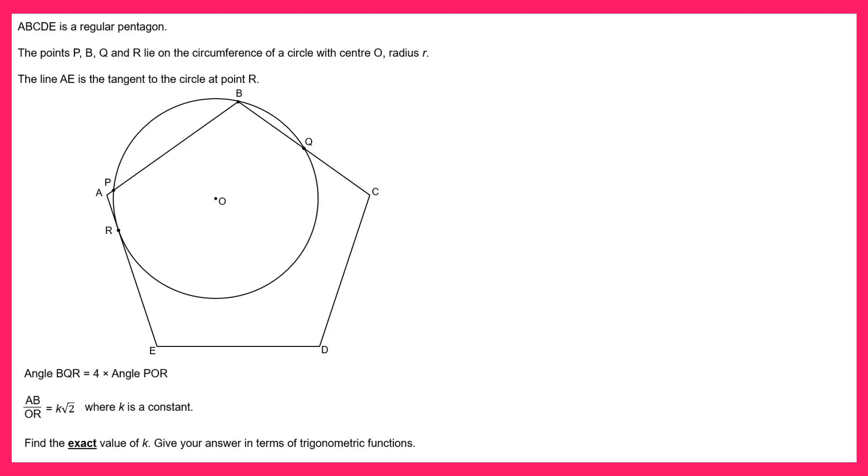Hello and welcome to the solution video to spicy question number 47. In this question we're told that angle BQR is equal to 4 lots of angle POR. Let's take a closer look at the diagram. Let's label angle POR first and I'm going to call that 2x. Then if we label angle BQR that must be 4 times as much so 8x.